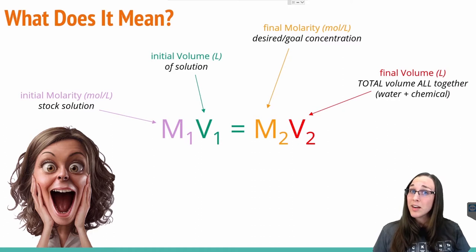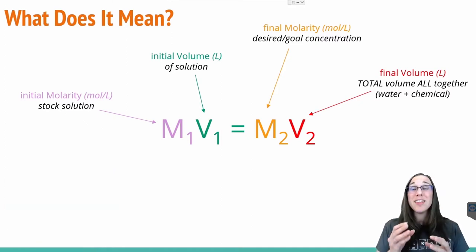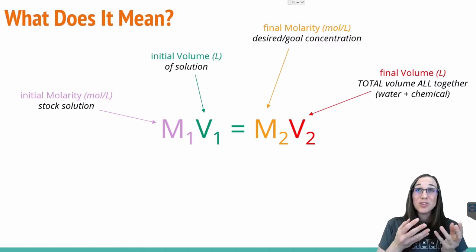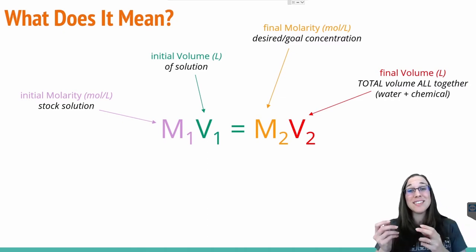M2 is the final molarity, again in moles per liter, and that's our desired goal concentration. And the V2, this is also very important, that's the volume of your chemical and your water together. So if you're trying to specifically solve for an amount of water or chemical, you would have to subtract out the initial V1 you started with to get to that answer.